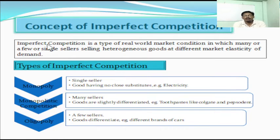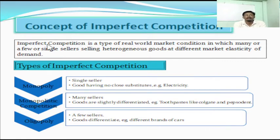Such a market type does not exist in the real world, so it is also called an imaginary market. In contrast to that, whenever the goods sold in the market are differentiated in quality — that means some differences exist in quality, or goods are heterogeneous — then the market is called an imperfect competitive market, whatever may be the number of sellers.